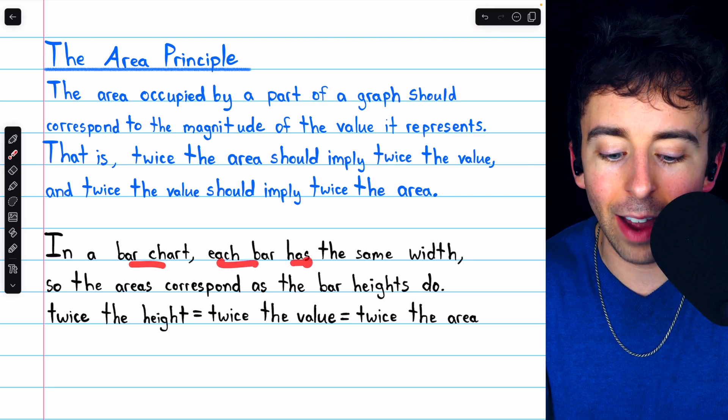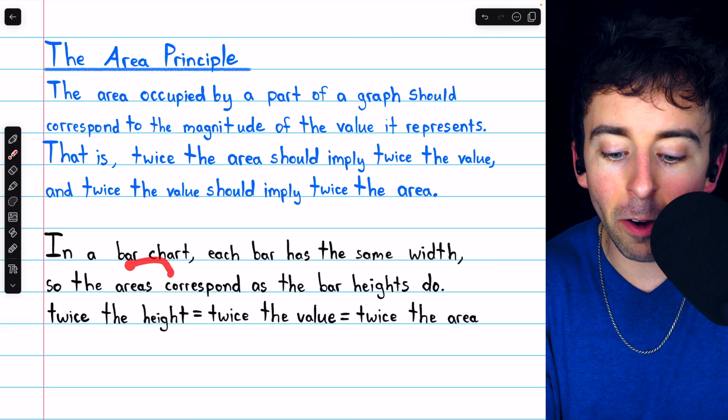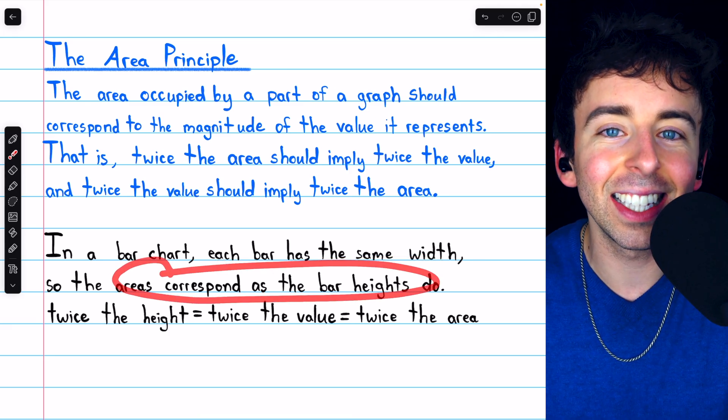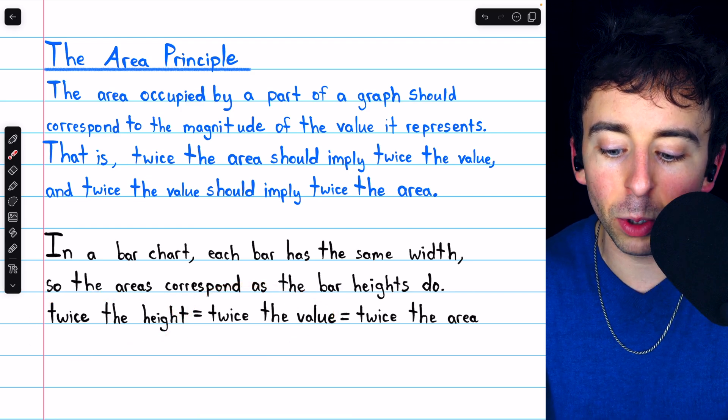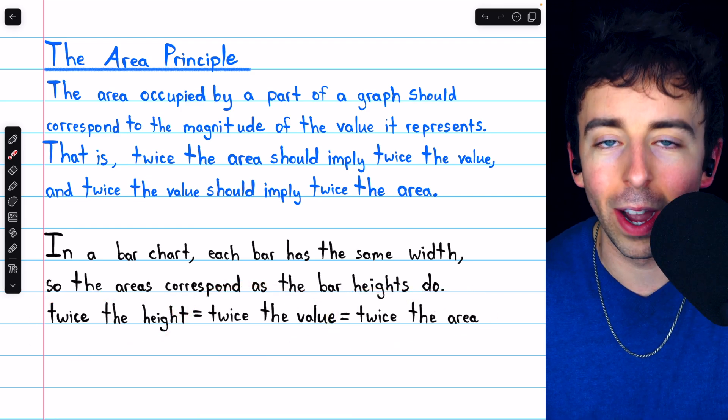In a bar chart, each bar will have the same width, and so the areas will correspond exactly as the heights do. Twice the height will represent twice the value, and that will accurately be reflected in twice the area.